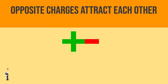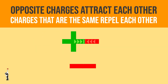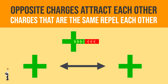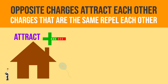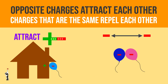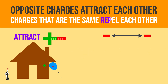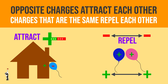Opposite charges attract each other, while charges that are the same repel each other. Positive and negative charges will be attracted to one another — that's why a negatively charged balloon can stick to a wall if the wall is slightly positively charged. However, if there are two objects that are both negatively charged, they will push away from each other. We say they repel each other, and the same will happen if they are both positively charged.